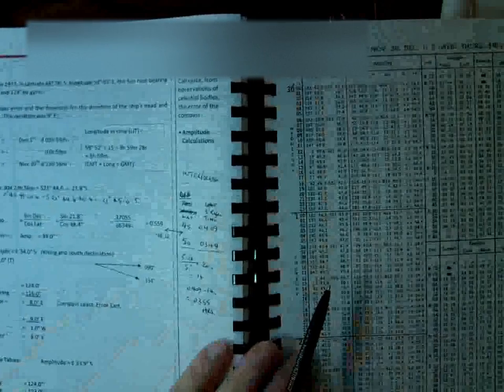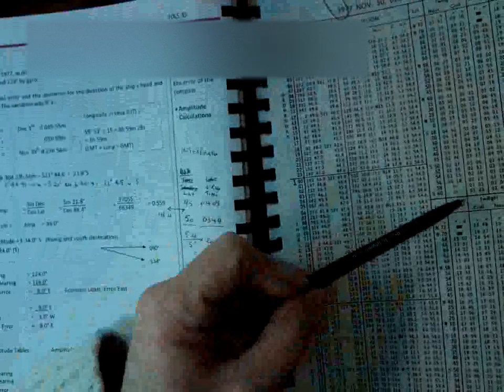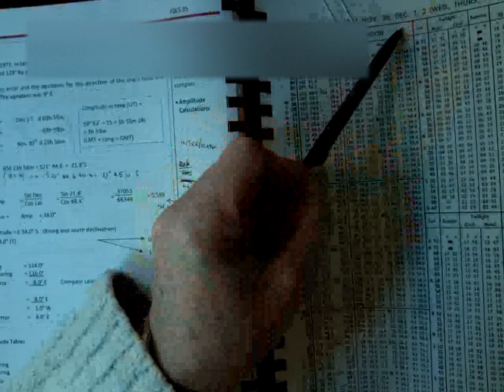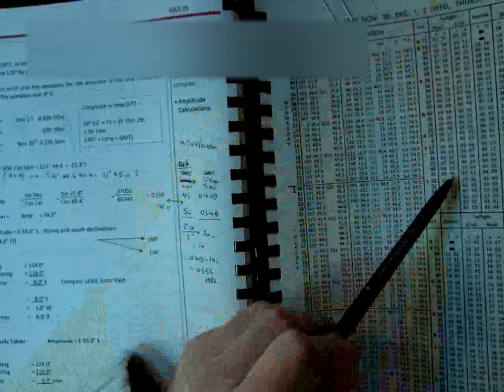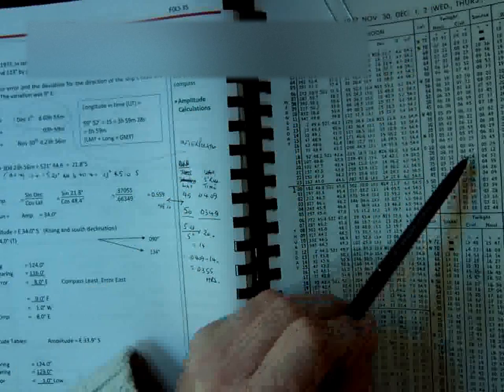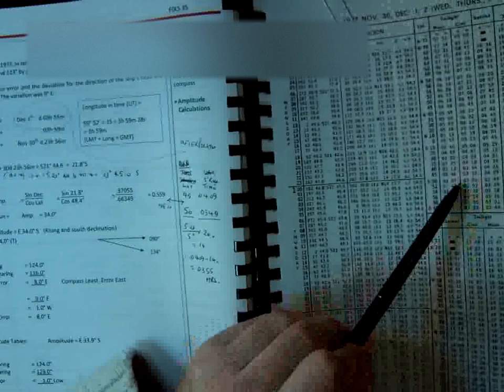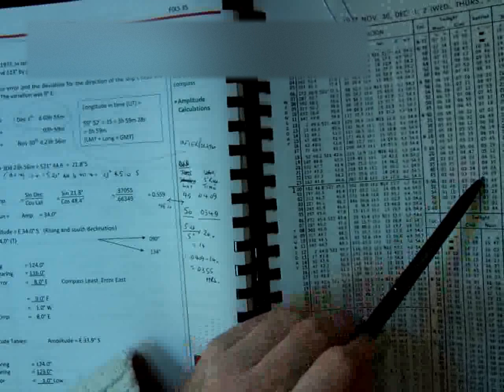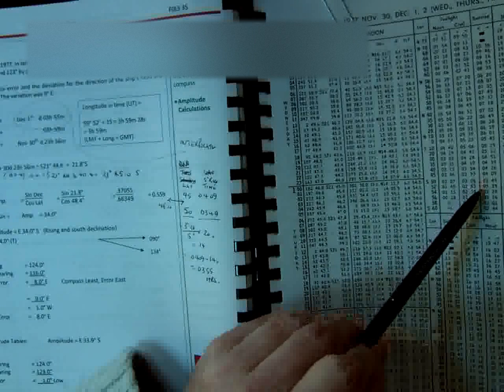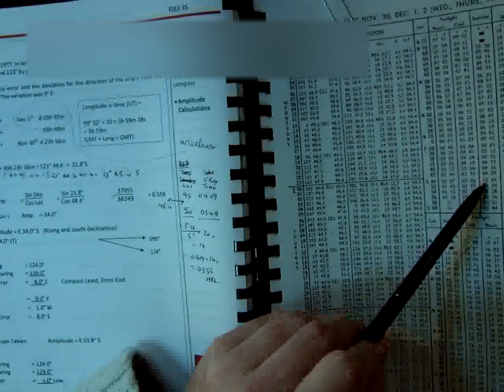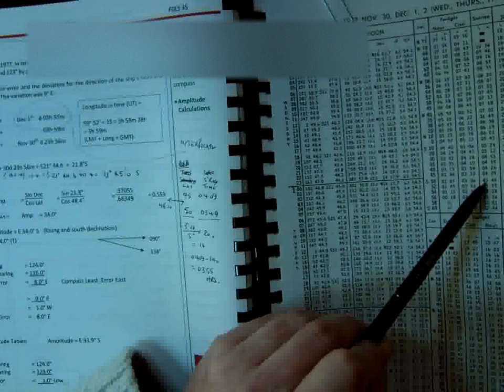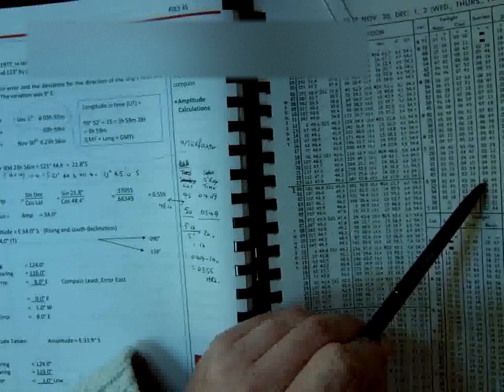So we're going to the tables on the 1st of December, and we look up a latitude of 48 degrees 26 south for sunrise. We see that at 45 degrees it's 0409, and at 50 degrees south it's 0349, and we need to find a time for 48 degrees 26.